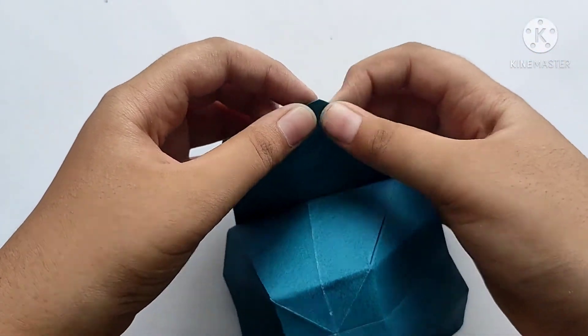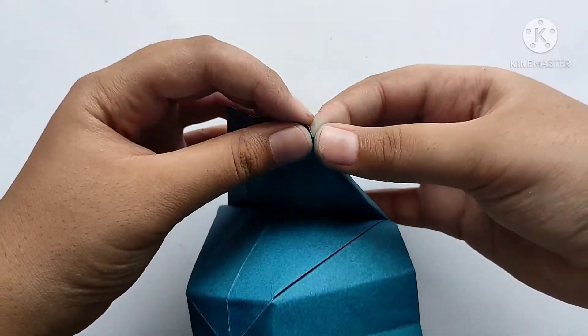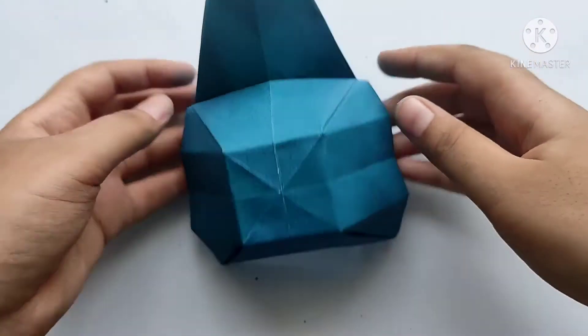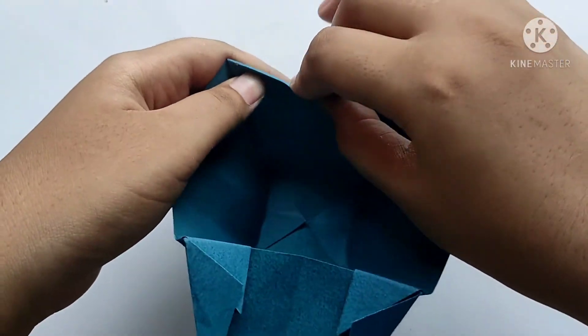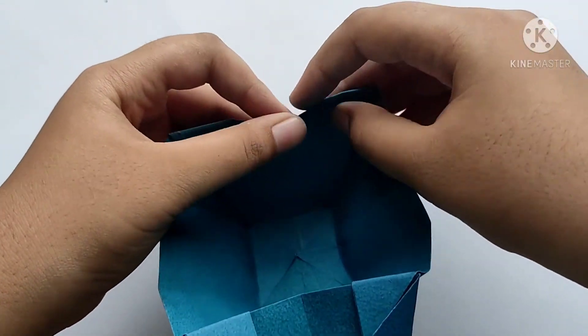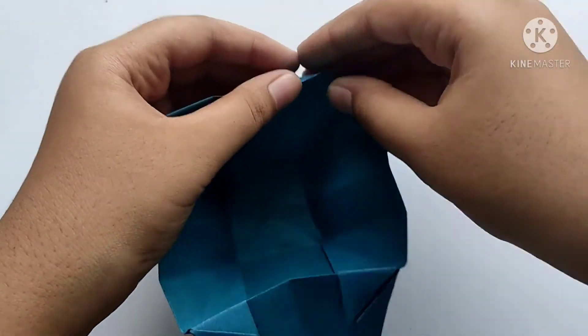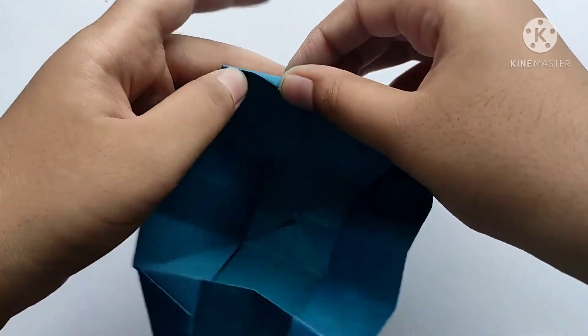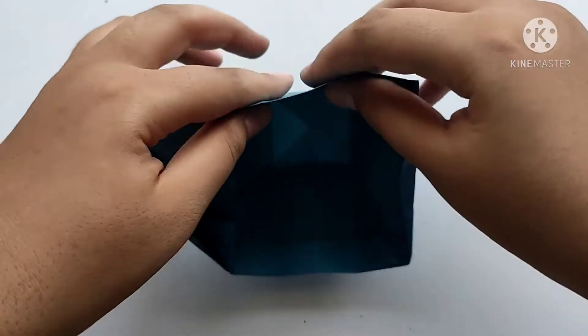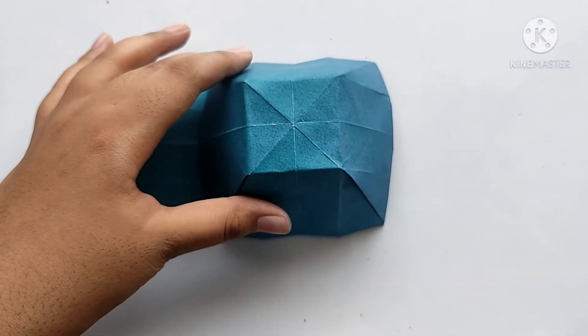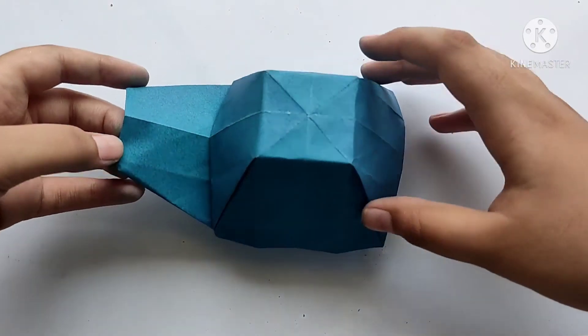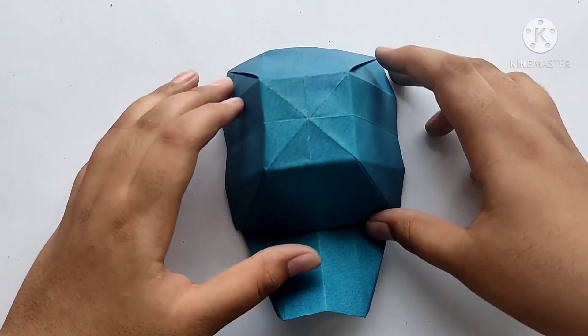Now we need to press the sides properly to lift the nose. Now we need to fold the back side downwards, curvy, and press properly. See friends, our origami cap is completed. See how it looks. Thanks for watching.